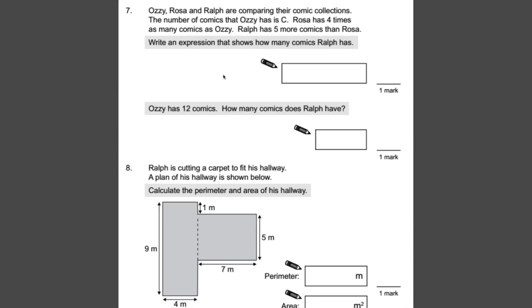Number seven. Ozzy, Rosa, and Ralph are comparing their comic collections. The number of comics that Ozzy has is C. Rosa has four times as many comics as Ozzy. And Ralph has five more comics than Rosa. Write an expression that shows how many comics Ralph has. This is just simple algebra. So let's start back at the beginning. We know that Ozzy has C amount of comics. But Rosa has four times as many. So we need four C. That's how we write that in algebra. Four lots of C.